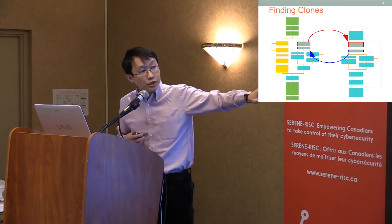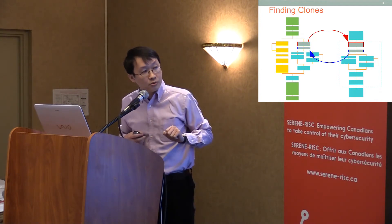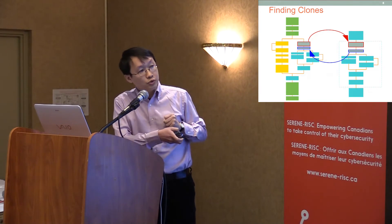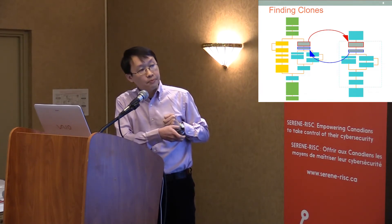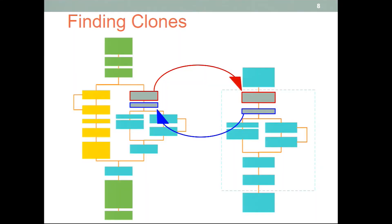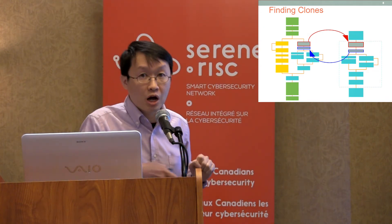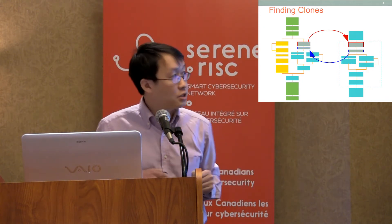The next step is to merge the clone pairs. We find that the red block is calling the blue block, and the corresponding blue block is called by this red block — we are trying to form a circular reference. The whole process of finding clones is to find this circular reference and incrementally expand it to find the maximal sub-graph clone.